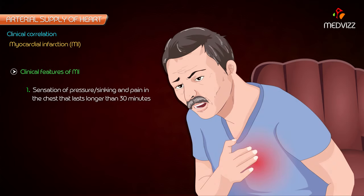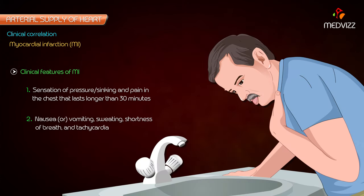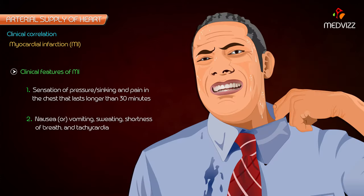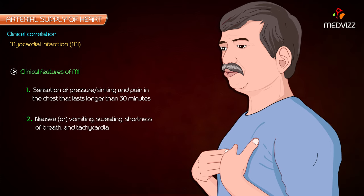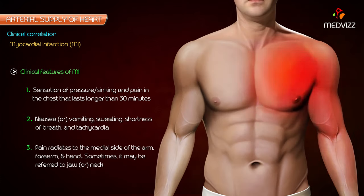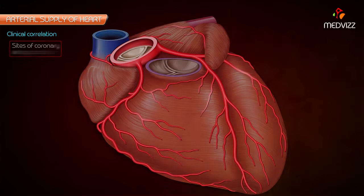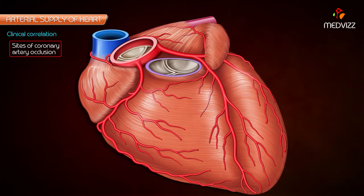The clinical features of myocardial infarction include: a sensation of pressure or sinking and pain in the chest lasting longer than 30 minutes; nausea or vomiting; sweating; shortness of breath; and tachycardia. Pain radiates to the medial side of the arm, forearm, and hand, and sometimes may be referred to the jaw or neck.